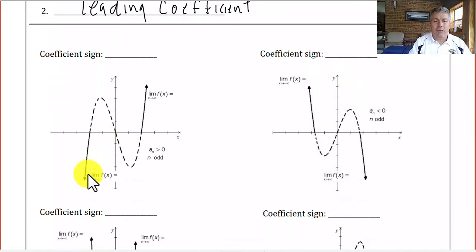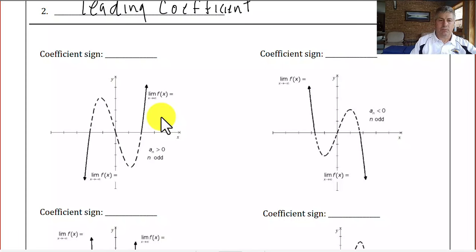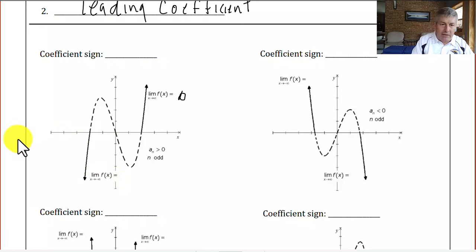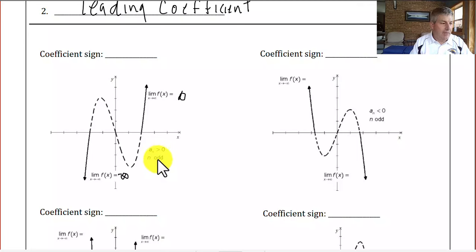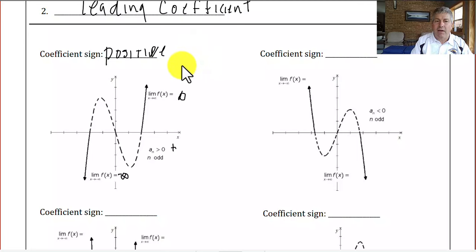Here are some graphs of some polynomials. They ask us to find the limit of this function as x approaches positive infinity — this graph is heading off to positive infinity. And the limit as x approaches negative infinity, the y value goes to negative infinity. This tells us our leading coefficient is positive and the exponent on that is odd.